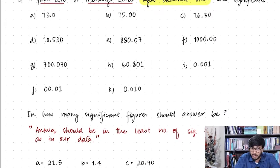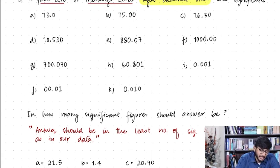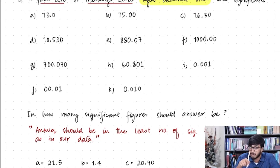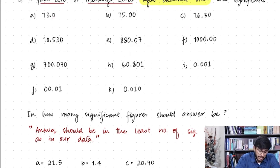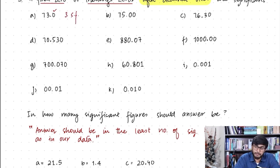For 73.0: the zero is a trailing zero written at the end of the number and after the decimal place. Remember, the trailing zero rule is only applicable after decimal places, not before. So this zero is significant, giving three significant figures.